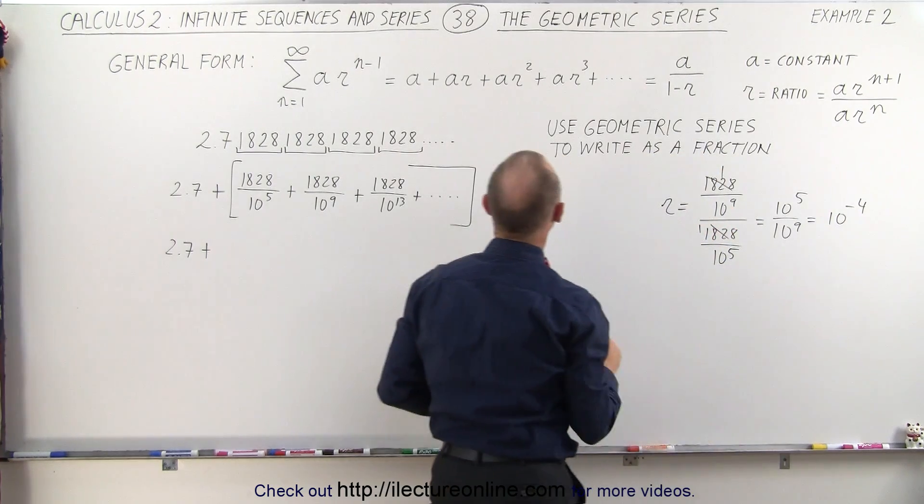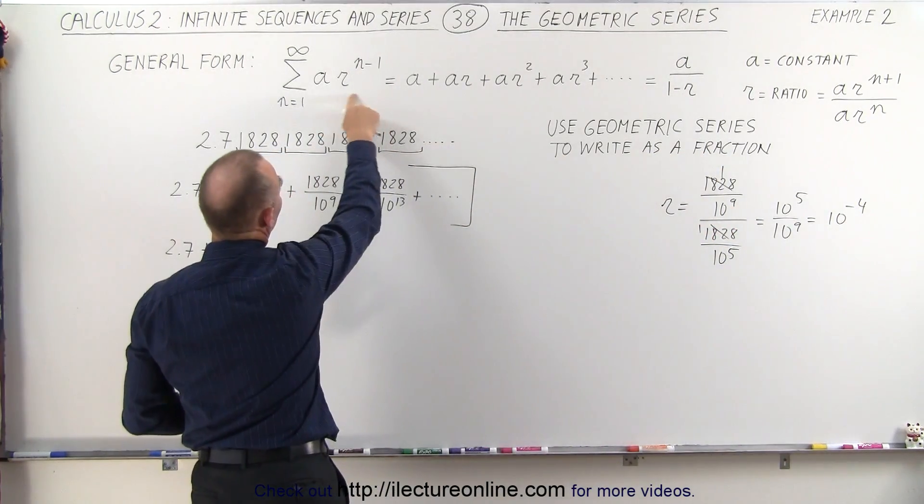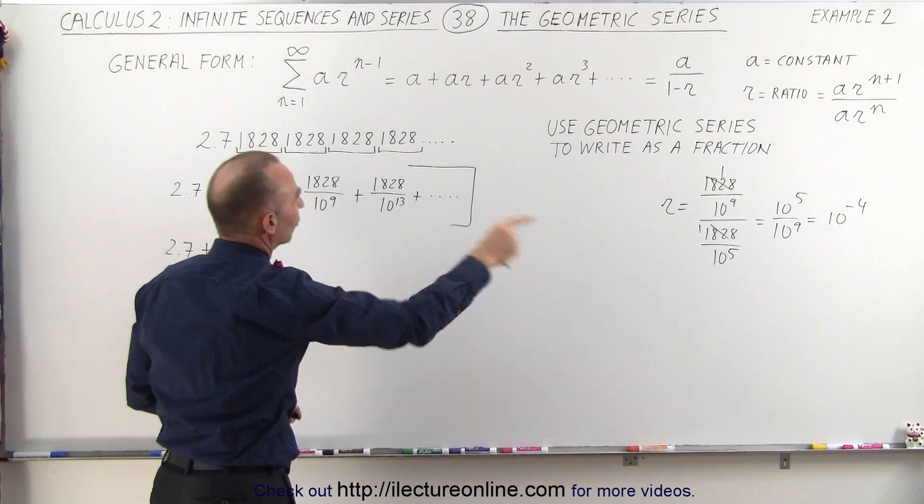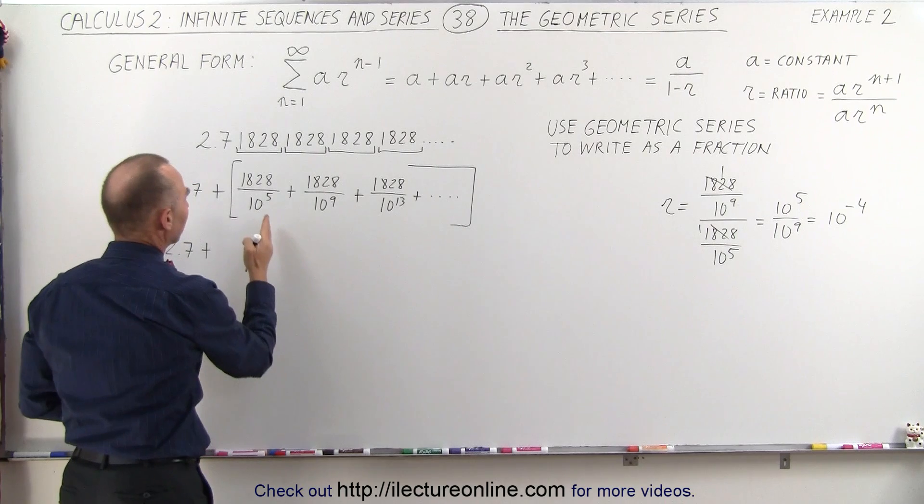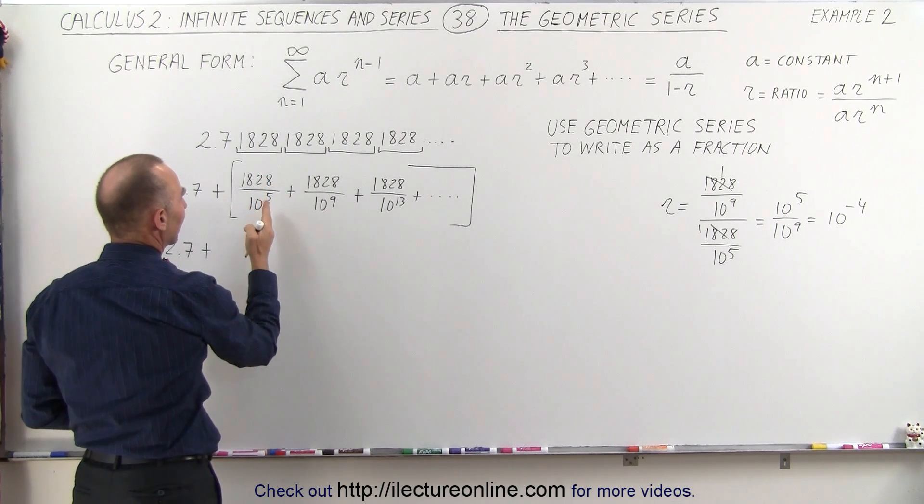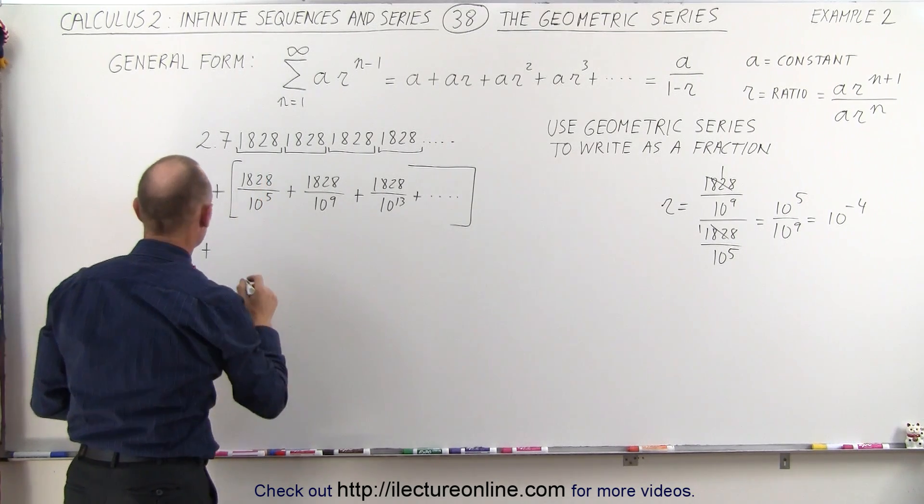So there's a common ratio. So we're going to have to write it somehow like this. The common ratio is 10 to the minus 4. If we now factor out 1828 divided by 10 to the 5th, I think we can make this work.